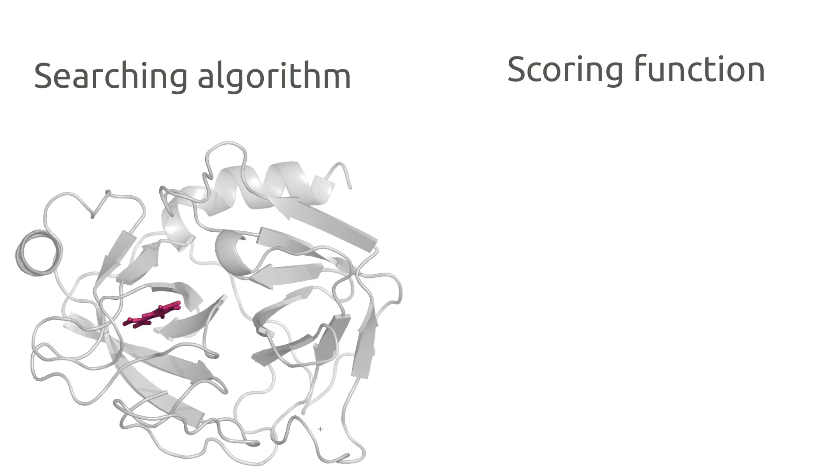These two components work hand in hand to find the most stable binding confirmation of the two partners. The searching algorithm, for clarity, is the component that is responsible for exploring the searching space by making systematic changes to the molecules orientation and conformation.